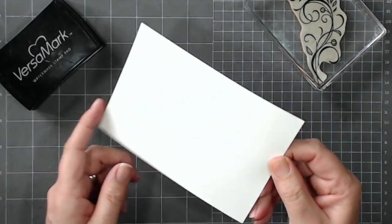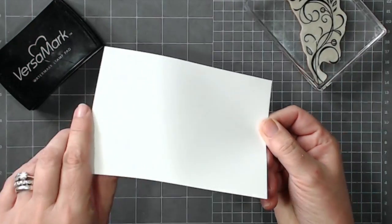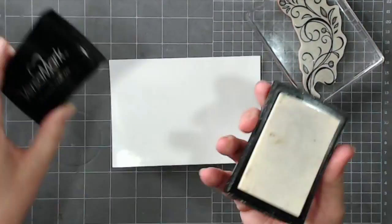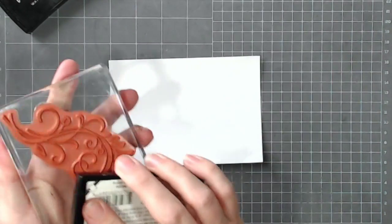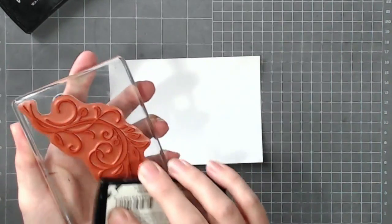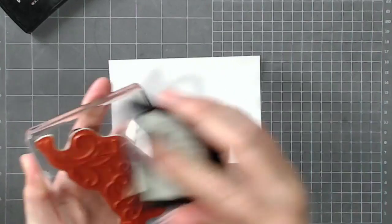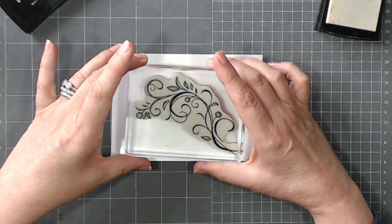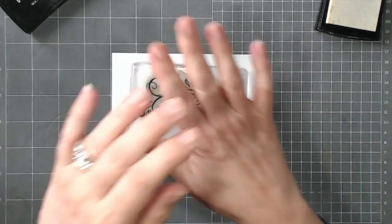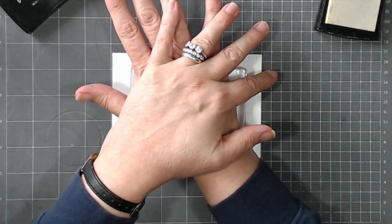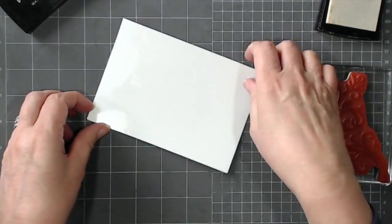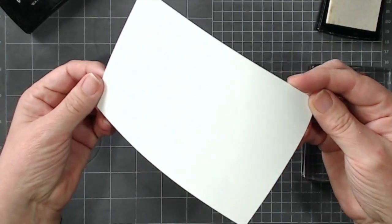I have my piece of glossy card - can you see that's glossy? My stamp is all mounted up onto my block and I have Versamark ink. I'm just going to stamp onto my block, so I'm going to start off with that one in the middle there and just press down. I don't know whether or not you can see it, I can just see it.